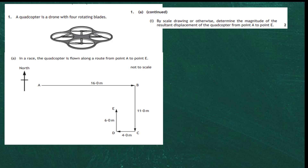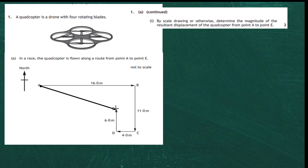The displacement can be found quite simply. If you start at A, your displacement is where you are from your final point. So that's the displacement we're looking for, and we have to find it with a scale diagram. That's our final displacement.